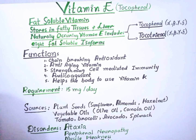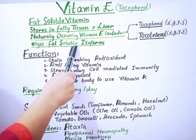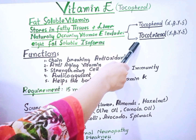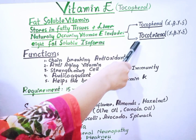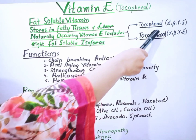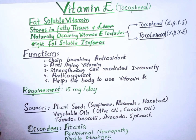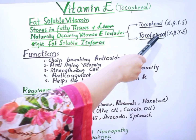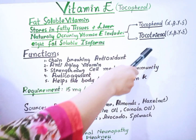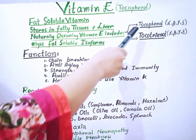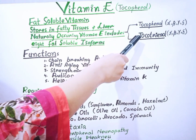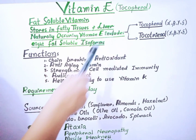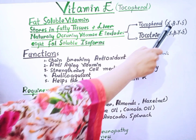The naturally occurring forms of Vitamin E include eight fat-soluble isoforms: the four tocopherols and the four tocotrienols. The tocopherols are available in alpha, beta, gamma, and delta form, while the tocotrienols are also available in alpha, beta, gamma, and delta form. The human body only utilizes alpha-tocopherol.